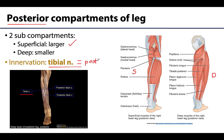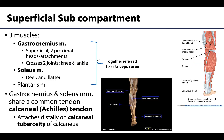In the posterior thigh region, it's the fibers from the tibial division of the sciatic nerve that innervate those muscles. So for both the posterior thigh and the posterior leg, think tibial nerve. These sub-compartments are actually separated from one another by an intramuscular septum, so there is a clear division here.